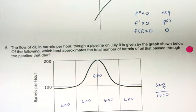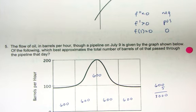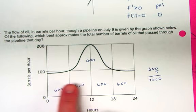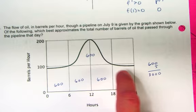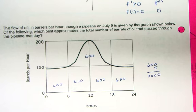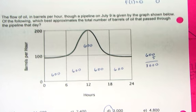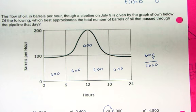The last one here, flow of oil through a pipeline is given by the graph, which approximates the total number of barrels of oil that passed through the pipeline that date. So we're just counting up. We're approximating 1, 2, 3, 4, and a total of 5 boxes that are each worth 600, 6 times 100 units. So that would be 3,000 barrels of oil.